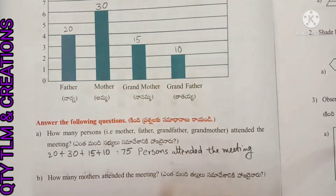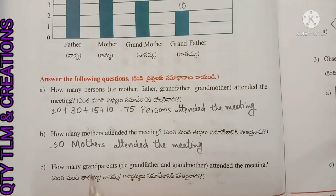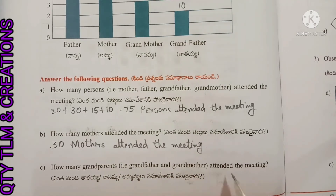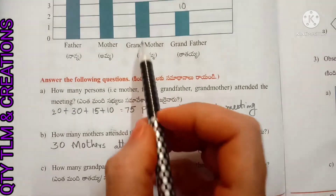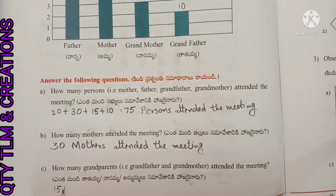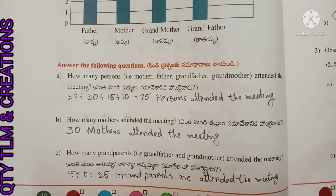How many grandparents, that is grandfathers and grandmothers, attended the meeting? Grandmothers: 15, grandfathers: 10, total 25 grandparents attended the meeting. Okay children, we will continue other topics with another video. Until then, bye, thank you.